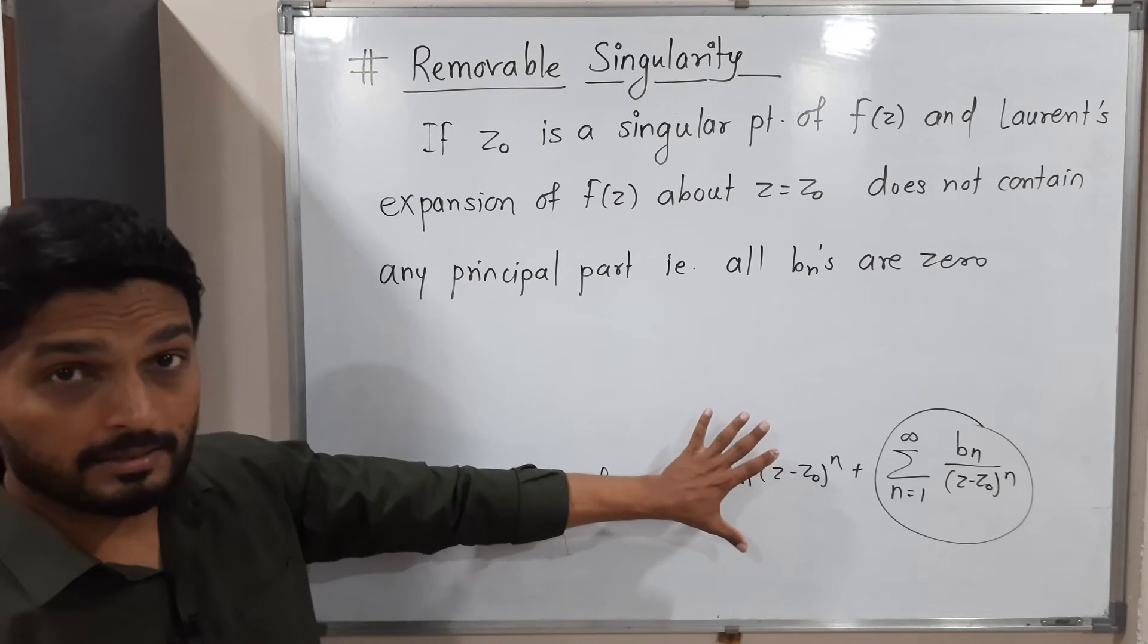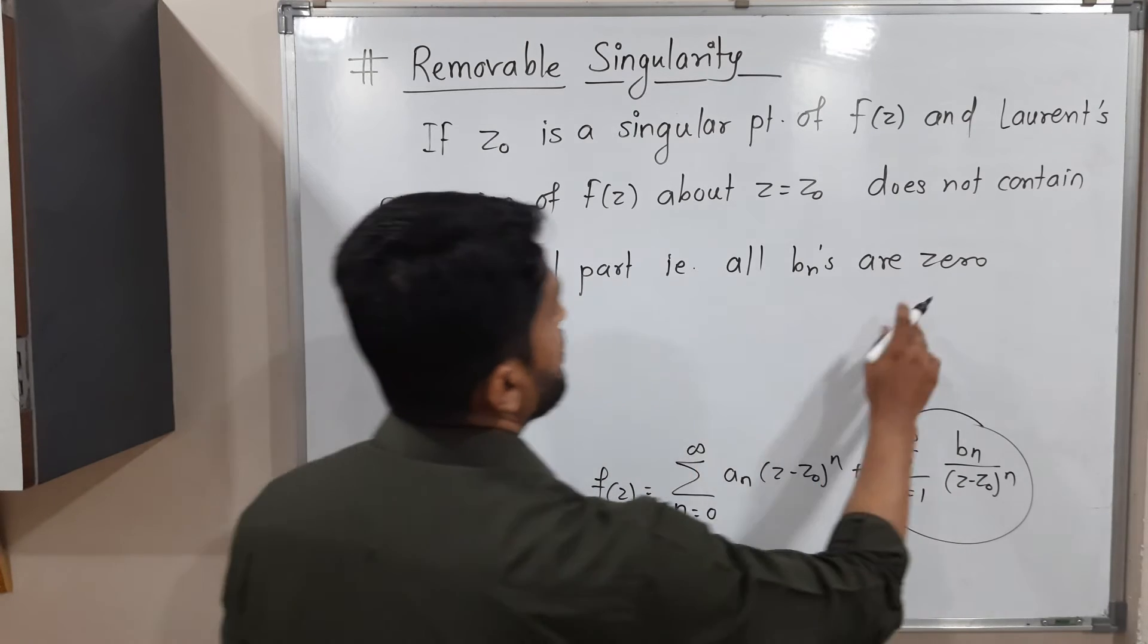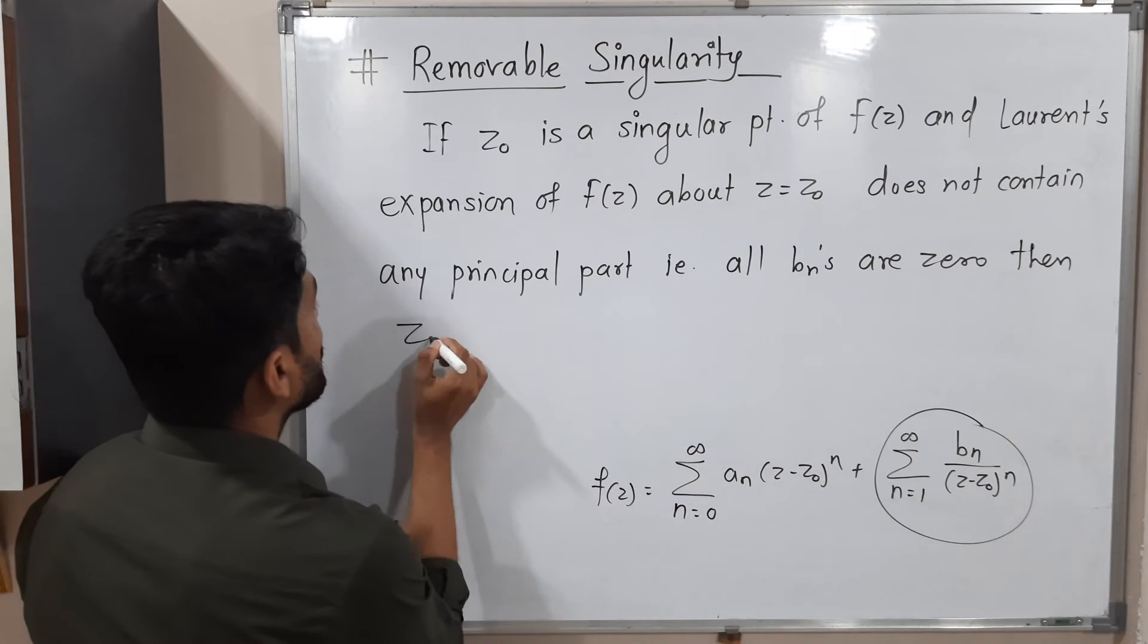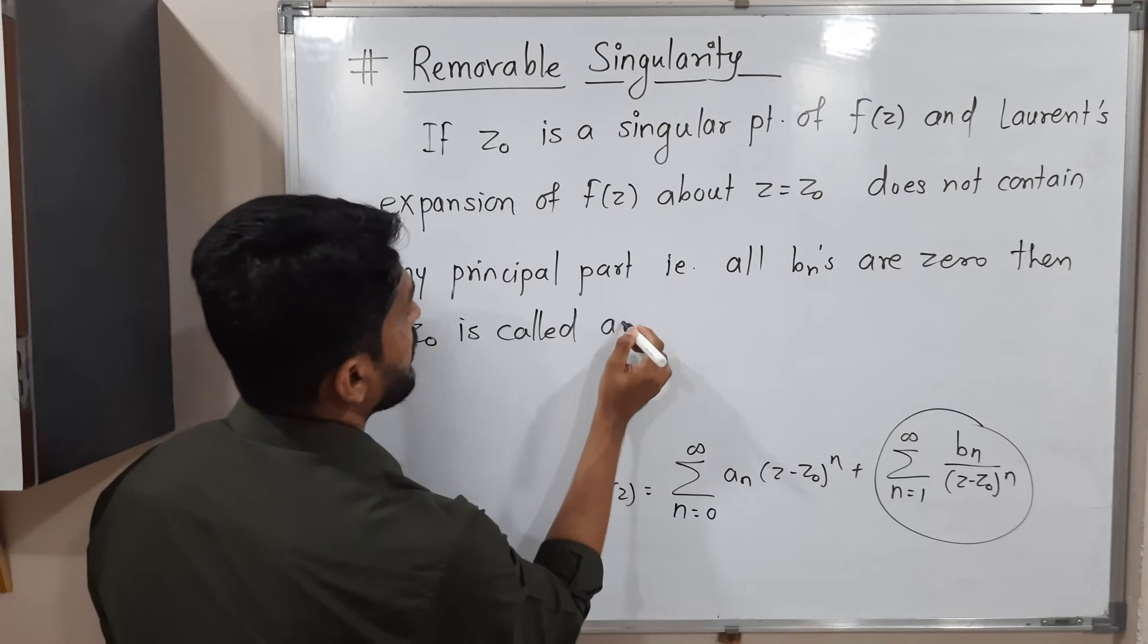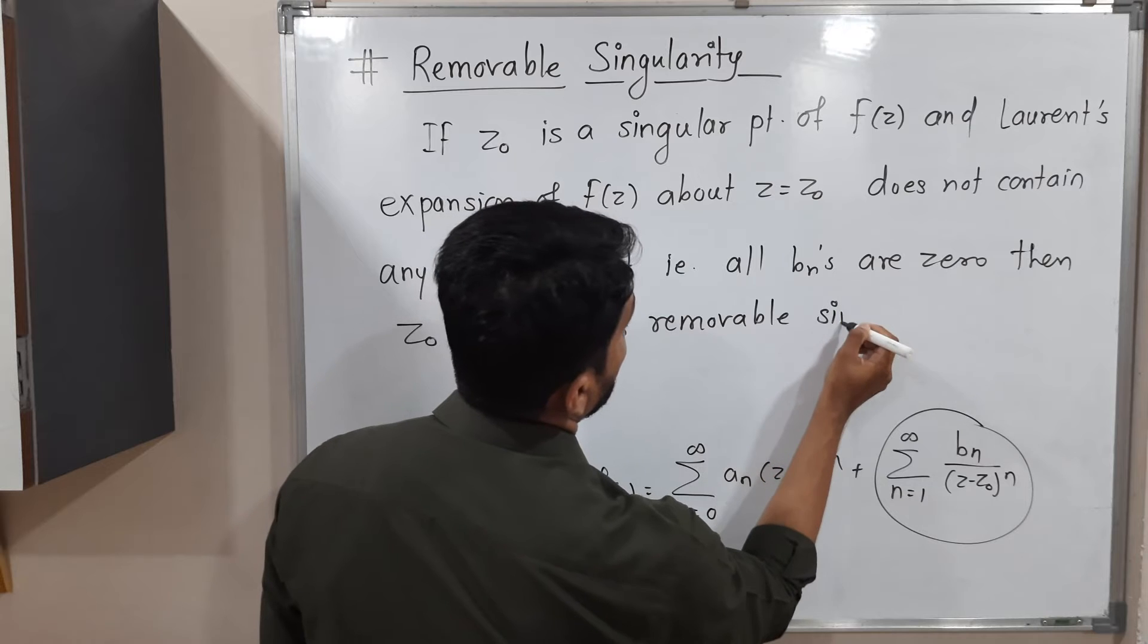That means you simply get a Taylor series. If you try to expand in this way, all bn's are 0, then z0 is called as removable singularity.